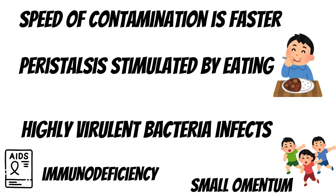If the infection is caused by highly virulent bacteria, the body's defense mechanism as well as the effect of antibiotics may not be sufficient, leading to early progression to diffuse peritonitis. In patients with immunodeficiency such as in HIV infection, their immunity cannot fight the infection adequately, hence they can develop diffuse peritonitis. In children, the small omentum means they cannot contain the peritonitis, leading to rapid progression to diffuse peritonitis.